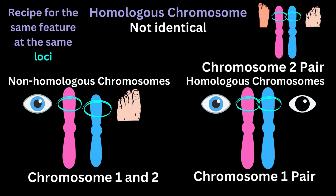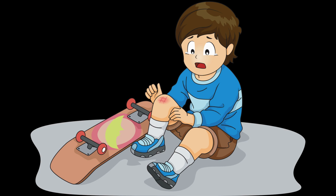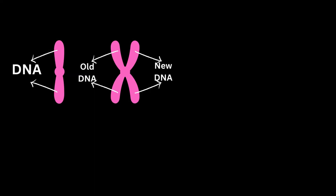Now if this is what homologous chromosomes are, what are sister chromatids? Let's say we've fallen and hurt our knee and lost a few skin cells. Our body will have to form new skin cells to replenish the lost ones. Our cells have only 46 chromosomes, and in the S phase of mitosis the DNA will replicate, resulting in an exact same strand of DNA being formed.